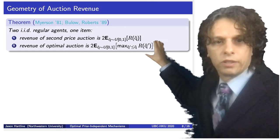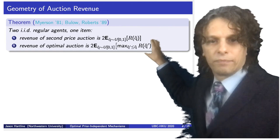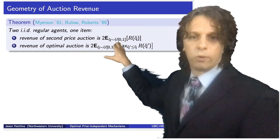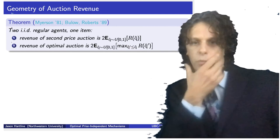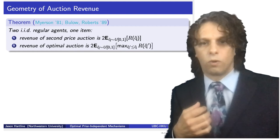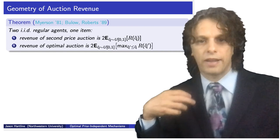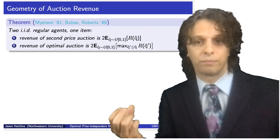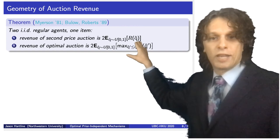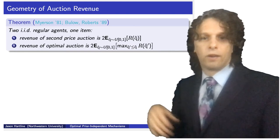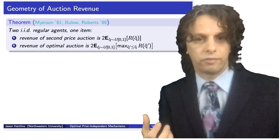With two IID regular agents and one item to sell, the revenue of the second price auction equals twice the expected value of drawing a quantile uniformly from [0,1] and evaluating the revenue curve at that quantile. Each agent in the second price auction is offered a price equal to the other agent's value, which is drawn IID from the value distribution — equivalent to drawing uniformly from the quantile distribution. With two agents, we get twice that revenue.